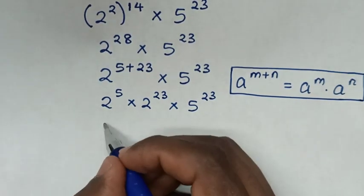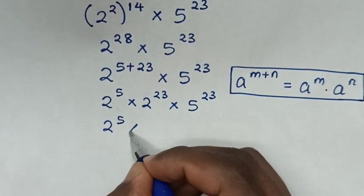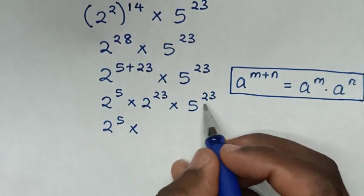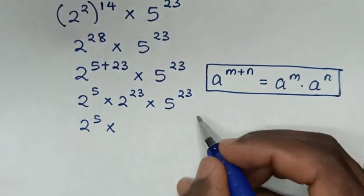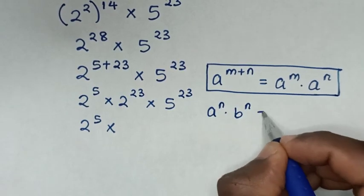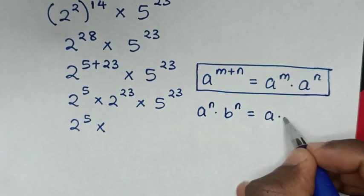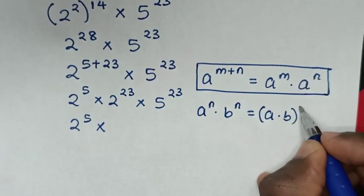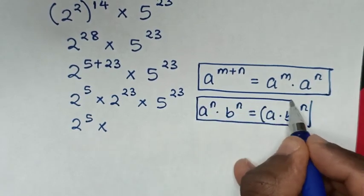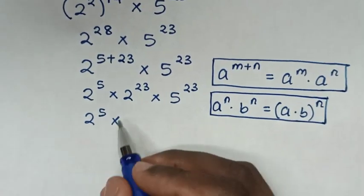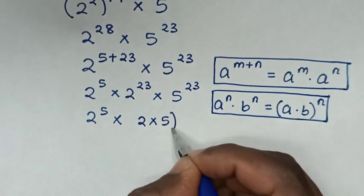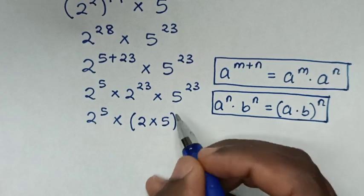Then it will be 2 to the power of 5, then times — in this multiplication of exponents with the same power — we'll apply the exponential rule that a to the power of n, times b to the power of n, equals (a times b) to the power of n. So here it will be 2 to the power of 5, times (2 times 5) to the power of 23.